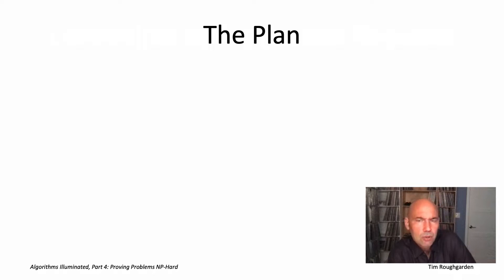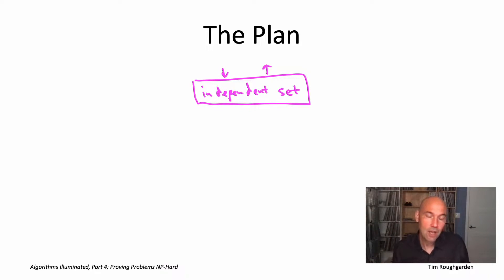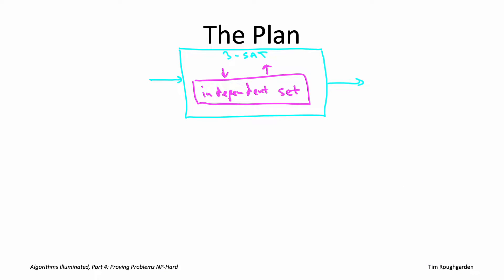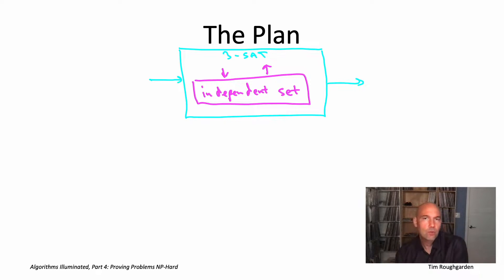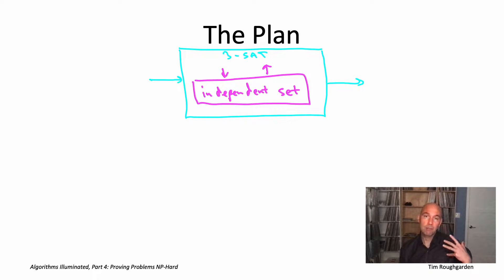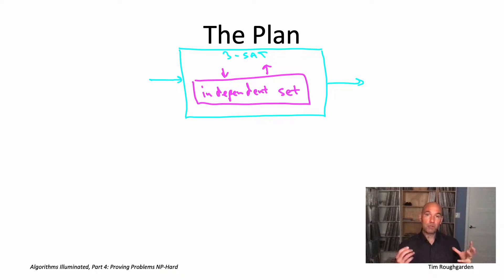So how are we going to reduce 3SAT to independent set? If we're given a subroutine for independent set — the magenta box — we need to show how to build an efficient algorithm for 3SAT, the light blue box. We have seen one NP-hardness reduction before, back in chapter 19, where we reduced the directed Hamiltonian path problem to the cycle-free shortest path problem. In that example the magenta box was a subroutine for computing cycle-free shortest paths and the light blue box was an algorithm for directed Hamiltonian path.